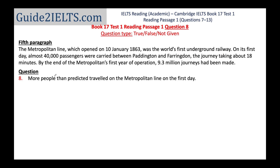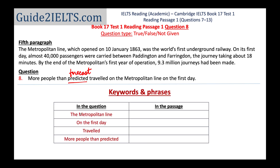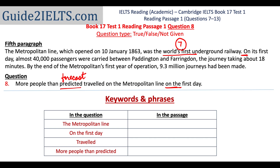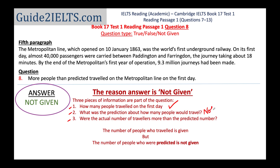On to the eighth question. It mentions 'metropolitan line' and 'first day.' In the passage, in the very next sentence after where we found the seventh answer, we see 'first day.' Reading the question carefully: 'More people than predicted travelled on the metropolitan line on the first day.' I have to find what the prediction was and how many people actually travelled. The passage gives the number of passengers on the first day — almost 40,000 — but there is no prediction about how many were expected to travel. Because part of the information is not given, the answer is Not Given.